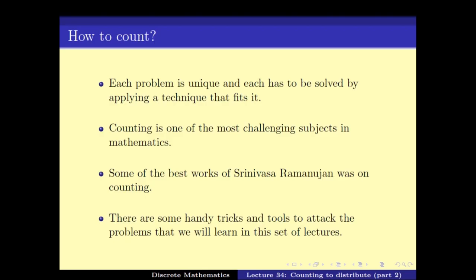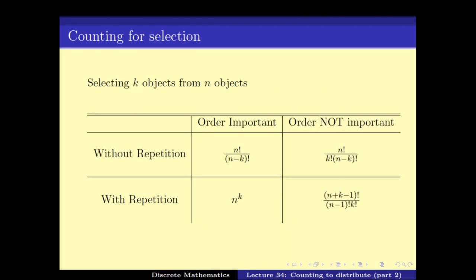Till now, we have already looked at the problem of how many ways can I select k objects from n objects. We looked at two cases: namely, are we allowed to pick the same object multiple times — meaning is repetition allowed among the k selected objects? And does the ordering of the k objects matter? We have seen how to solve all four cases.